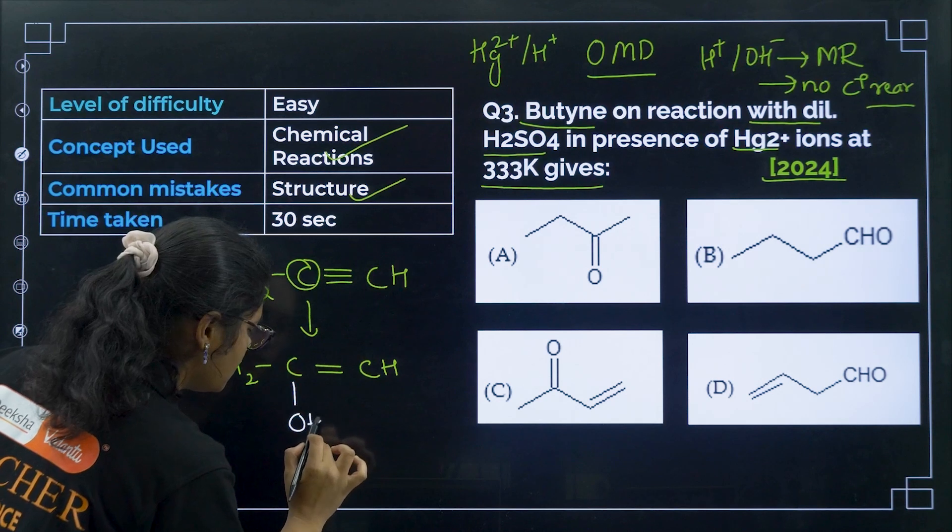Question 16: which carbonyl compound does not undergo aldol condensation? If it does not undergo aldol condensation, it must have no alpha hydrogen. Looking at the options — dichloroacetaldehyde, trichloroacetaldehyde (CCl₃CHO), acetaldehyde, and acetone — trichloroacetaldehyde has no alpha hydrogen. Option number B is the correct answer.